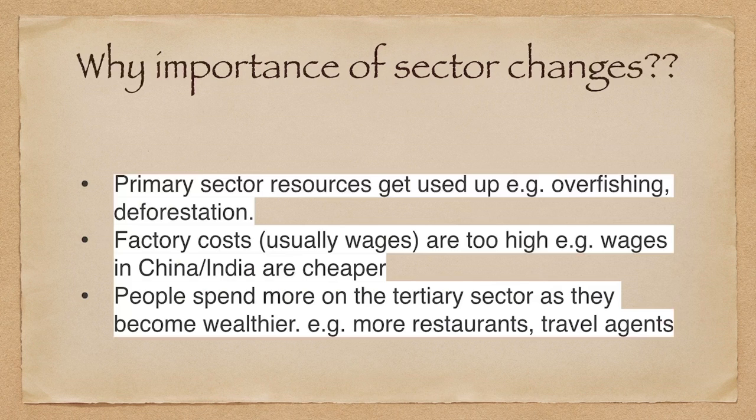For example, wages in China or India are cheaper. People spend more on the tertiary sector as they become wealthier, for example more restaurants and travel agents.